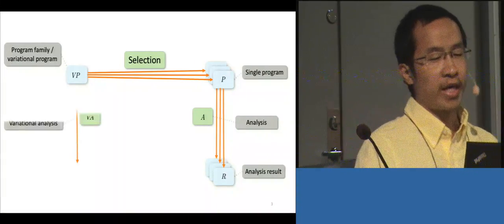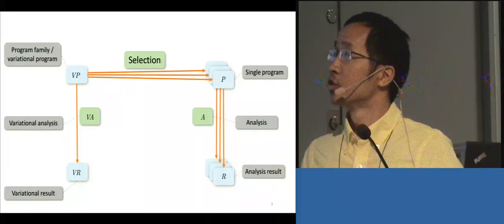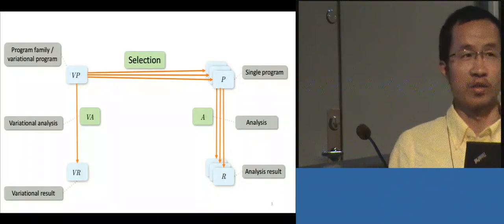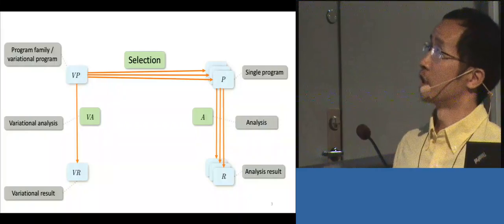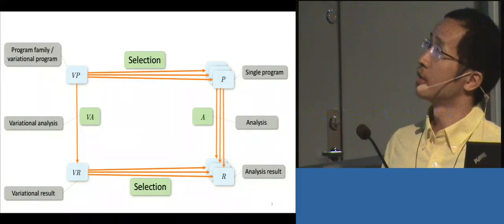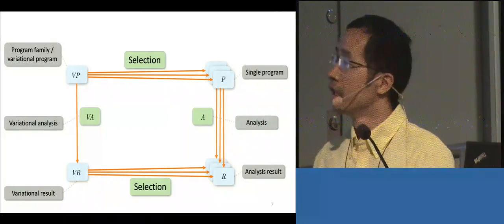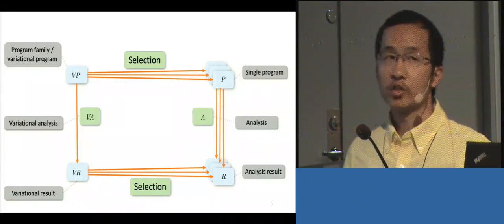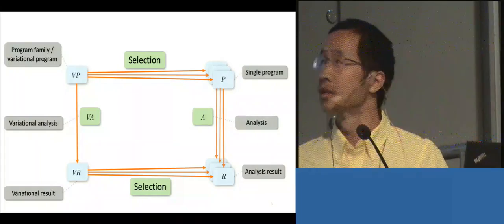An alternative path has been taken by researchers from variational software. What they do is apply variational analysis directly to the variational program, and in that case we get a variational result. Interestingly, if we make the same selections in both the program and the result, these two paths converge. This shows that the order — whether we make a selection first or apply the corresponding analysis first — doesn't matter.